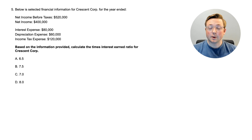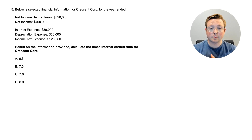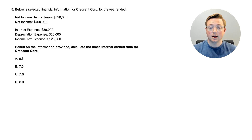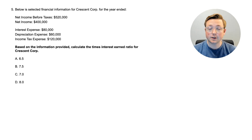Here we are at question five. As always, read the last part: based on the information provided, calculate the times interest earned ratio for Crescent Corp. We just learned how to do this in the previous question. Below is selected financial information for Crescent Corp. for the year ended: net income before taxes $520,000, net income $400,000, interest expense $80,000, depreciation expense $60,000, and income tax expense $120,000. It's not a full income statement, so think through how to get the information needed. Pause the video, do the calculation, and come back.